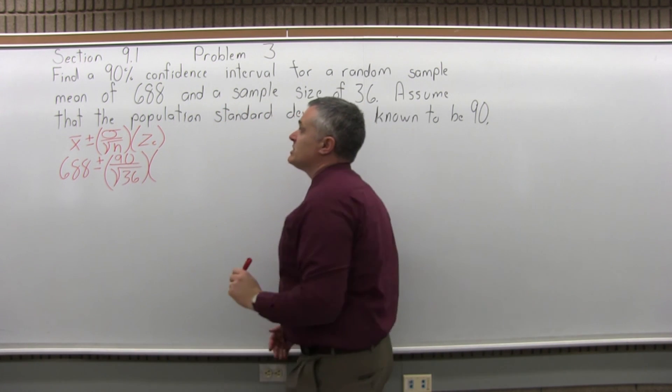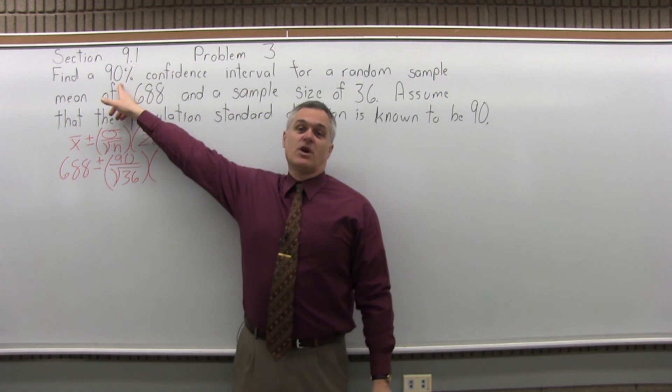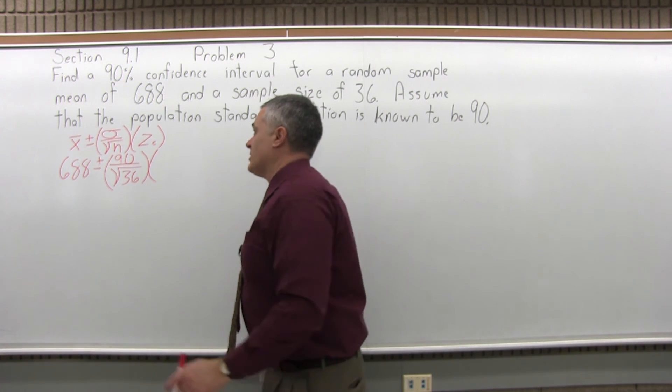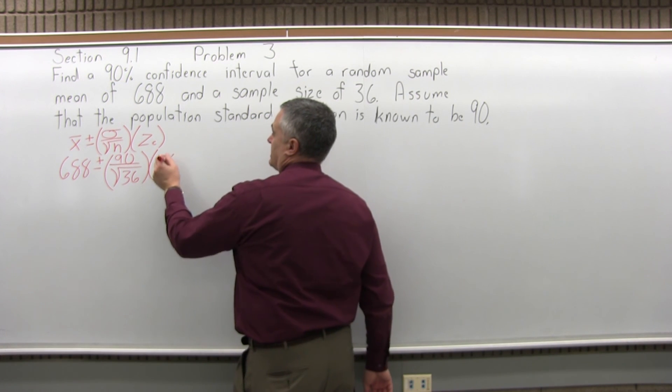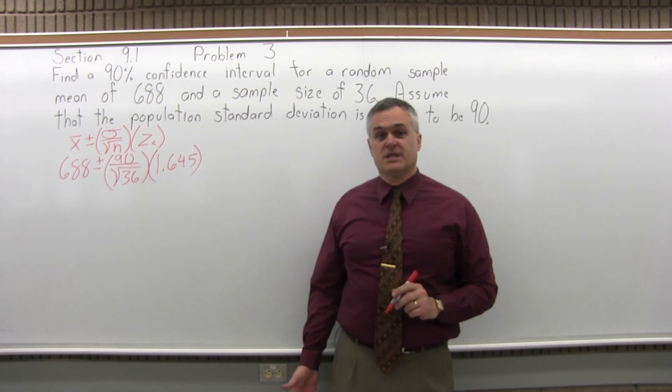Times z sub c, the confidence coefficient. So what you have to do is look up the confidence coefficient for a confidence of 90%. And there's a little chart where you can look that up. And the confidence coefficient for 90% is 1.645.